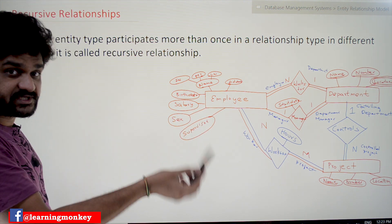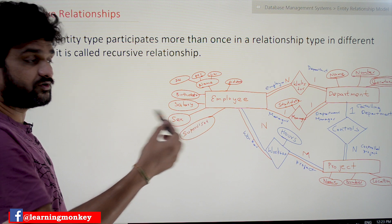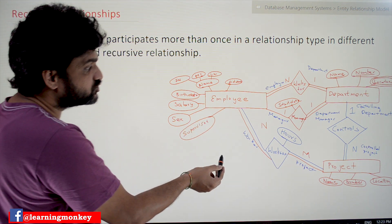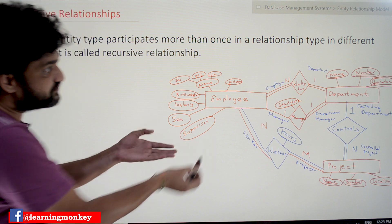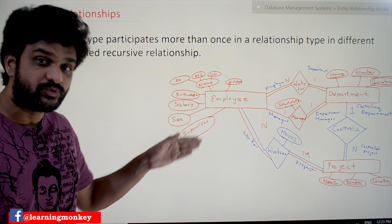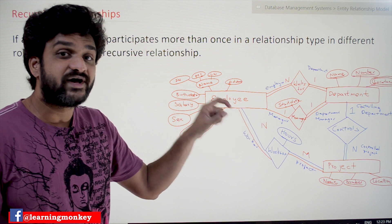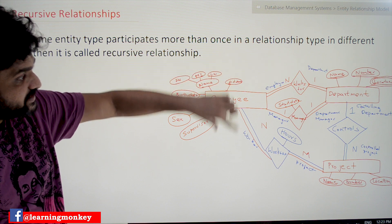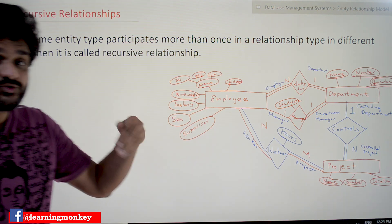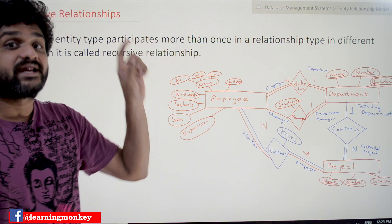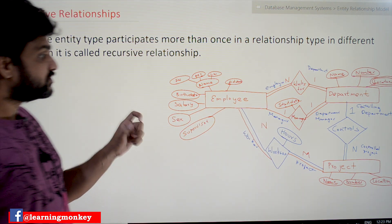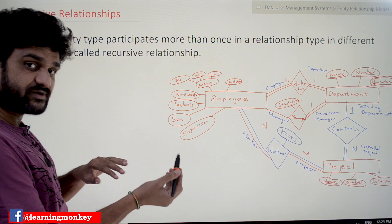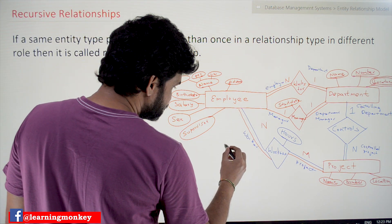So the same entity type is participating in the relationship type called supervision. We are going to create a new relationship type called supervision. This employee entity is participating in supervision on the same relationship type in different roles — one role is supervisor and the other role is supervisee. Those kinds of relationship types are called recursive relationships.